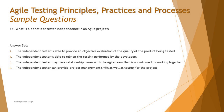Let's look at the options. Option A says the independent tester is able to provide an objective evaluation of the quality of the product being tested — yes, that aligns directly with the concept we discussed. Option B says the independent tester is able to rely on testing performed by the developers — no, that's exactly what we want to overcome, since developers as human beings cannot reliably find all their own mistakes. Option C says independent testers may have relationship issues with the agile team — that is actually a drawback, not a benefit.